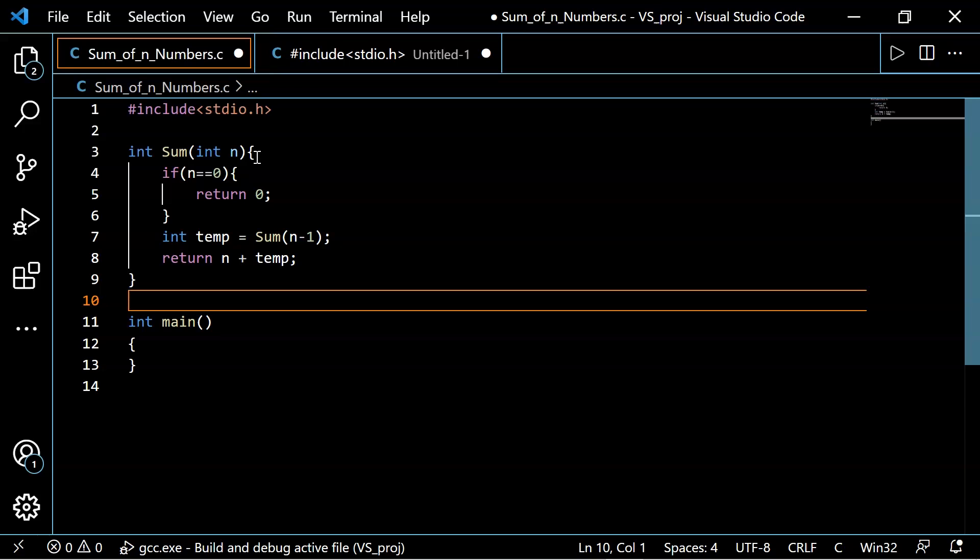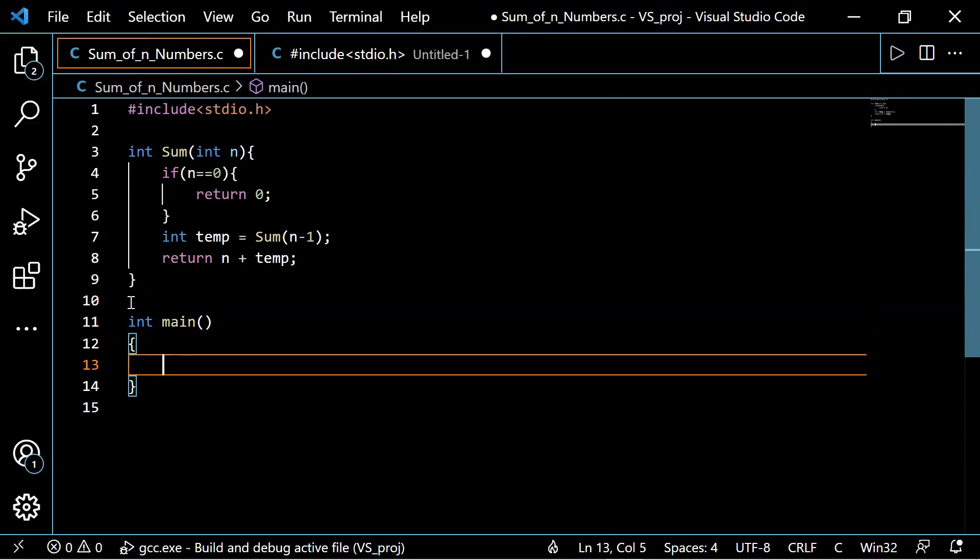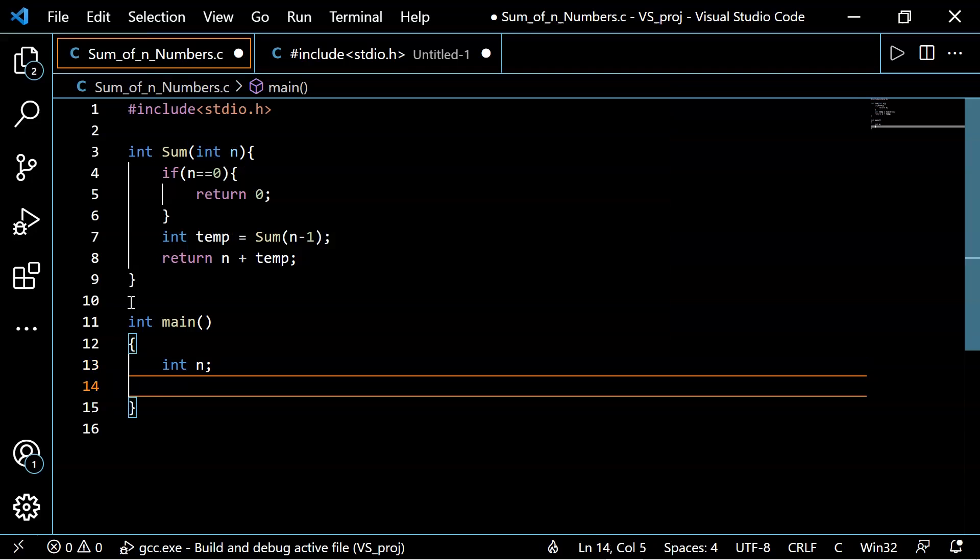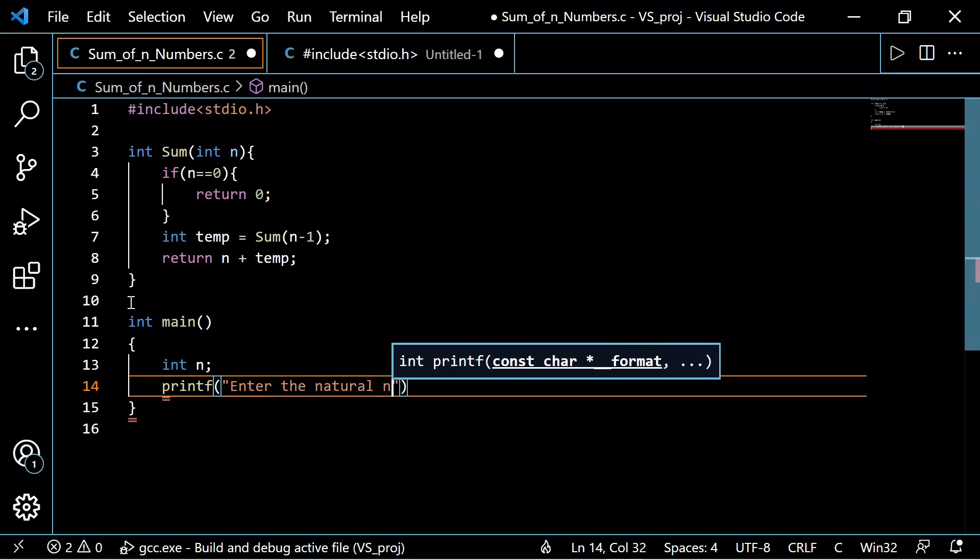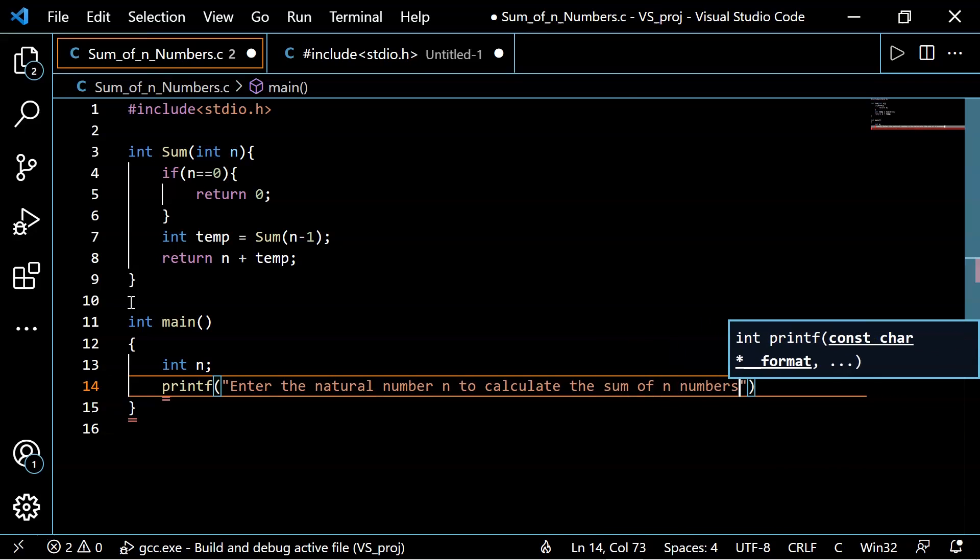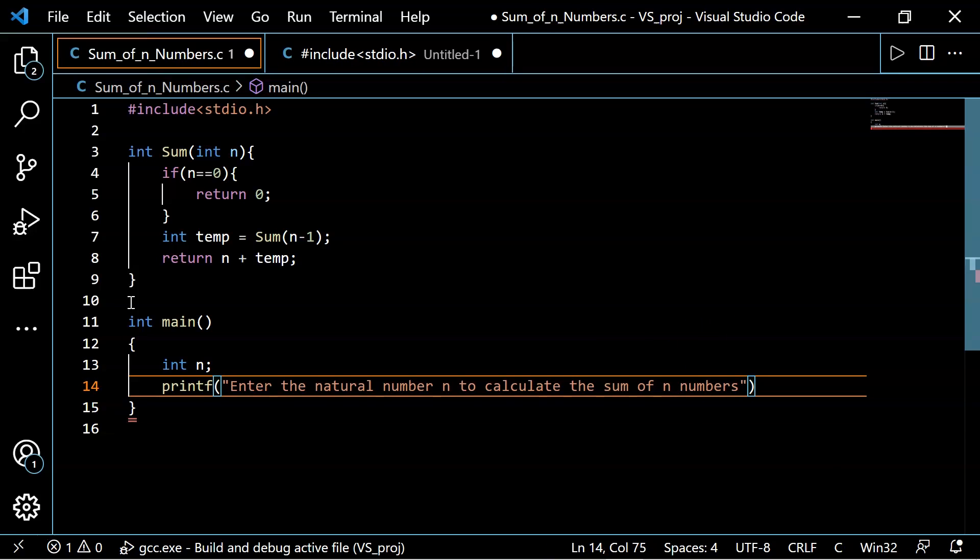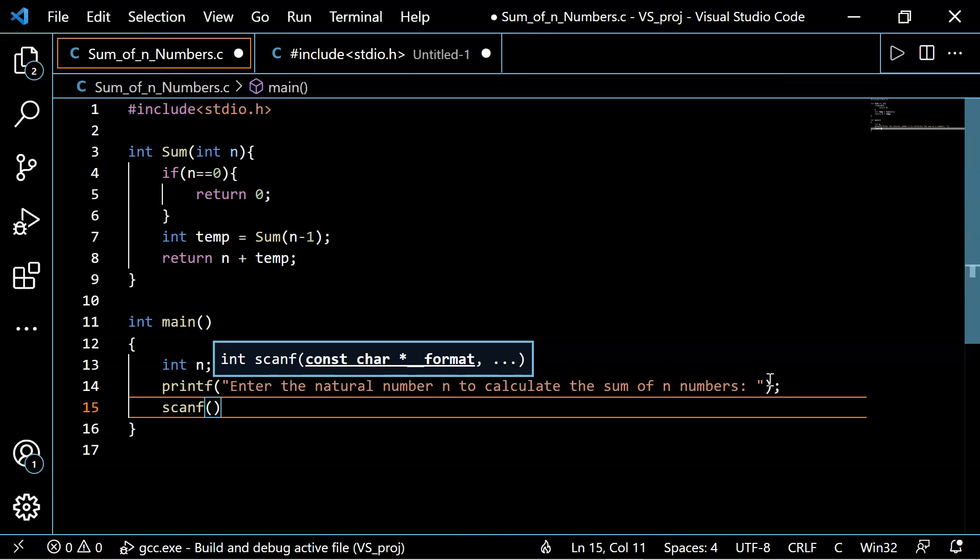So let's work on our driver method to generate the result. And this driver method, first we'll create a variable n. And after that, we'll write a printf statement: Enter the natural number n to calculate the sum of n numbers. And in next line, we'll write scanf statement in order to take input from our user. So how we can do that? Well, we can add %d here, comma, address of n.